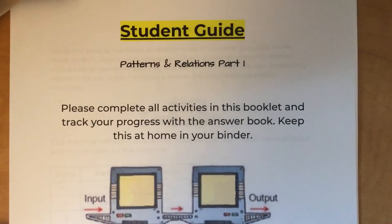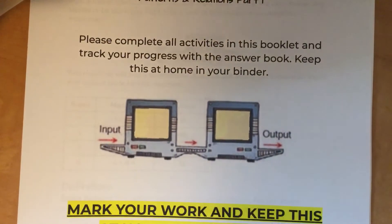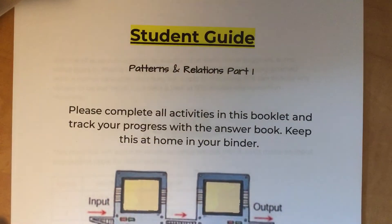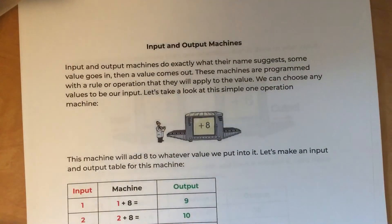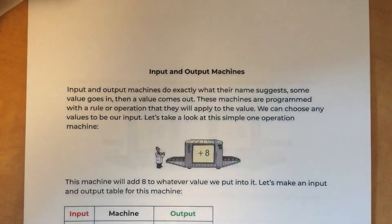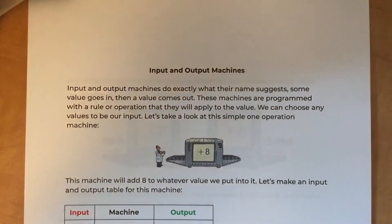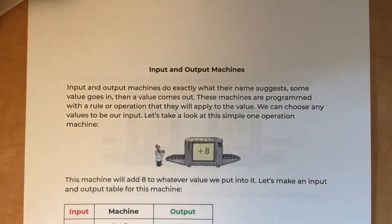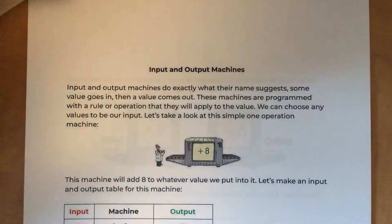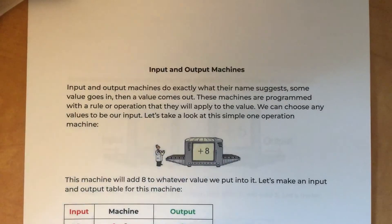We're looking at patterns and relations and writing expressions for patterns. The first thing you'll be doing is understanding input and output machines. The fancy word for this in higher grades is a function. In a function, you put a value in, some rule is applied to it, and then it spits out an output. Whatever we put in as input, a consistent rule is applied every time, and then it outputs a result.